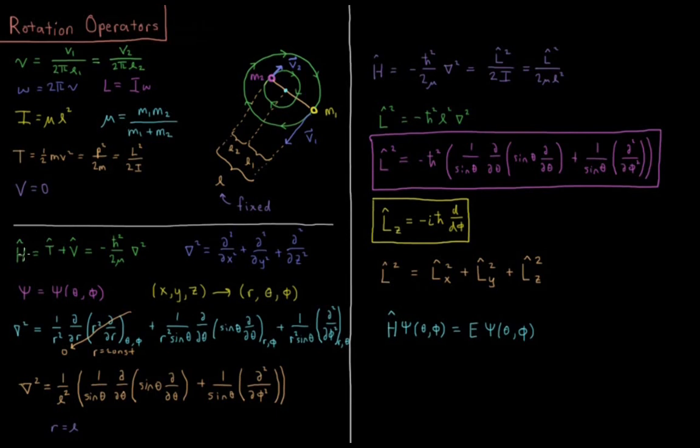So in order to solve the Schrödinger equation for this system, we need to get a Hamiltonian operator for our Schrödinger equation, H ψ equals E ψ. So we have H equals the kinetic energy operator plus potential energy operator.